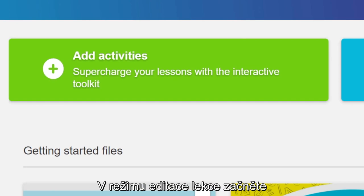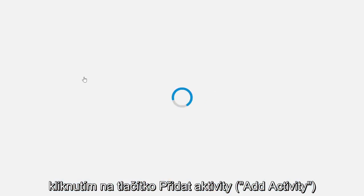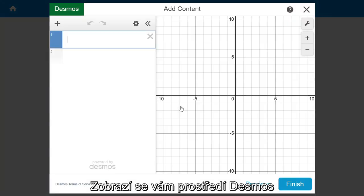In lesson edit mode, get started by selecting the Add Activities tab, then select Desmos. This will display a blank Desmos coordinate plane.